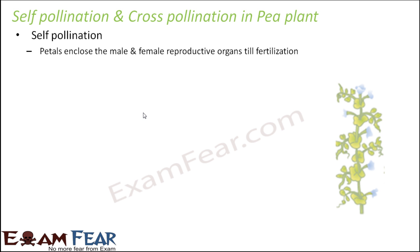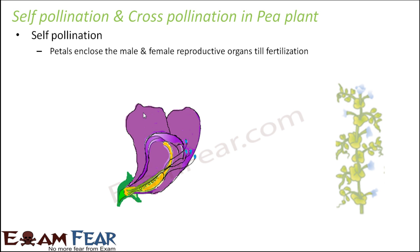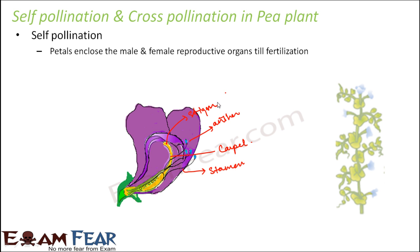Now how was self-pollination done? This was quite easy with the pea plant because the petals enclose the male and the female reproductive organs till fertilization. If you look at this picture, you can actually see these are the petals — the coloured structures; here it is purple coloured. Inside them, these are the male reproductive structures, that is the stamens. And this is the yellow coloured structure — that is the female reproductive structure, that is the carpel or pistil. The stigma and the anthers are very close to each other. Therefore, fertilization occurs inside, within the petals, so self-pollination was quite easy here.